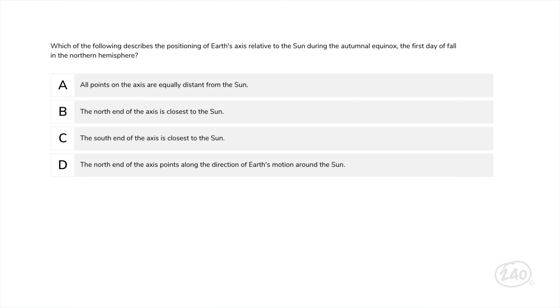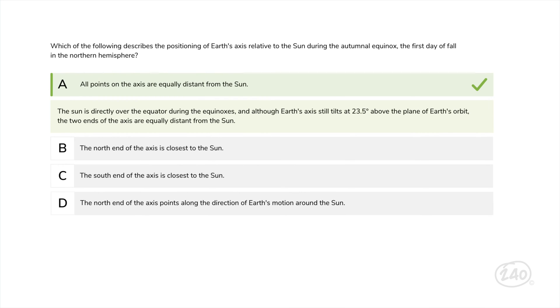Ready for a practice question like one you'll actually see on your exam? Which of the following describes the positioning of Earth's axis relative to the sun during the autumnal equinox, the first day of fall in the northern hemisphere? The sun is directly over the equator during the equinoxes. And although Earth's axis still tilts at 23.5 degrees above the plane of Earth's orbit, the two ends of the axis are equally distant from the sun. So answer A is best.